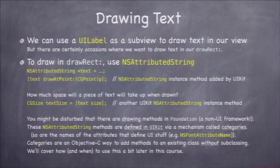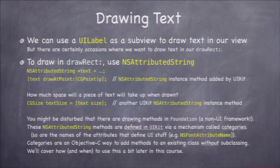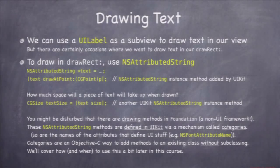You can also find out how big that text is going to take — how much space it's going to take — by sending size to the attributed string and it'll tell you how big it is. Now, you might be a little disturbed by this: attributed string is not really a UIKit thing. All the properties inside usually are, but it itself is not. UIKit actually adds these methods — draw at point, and size, and there are a few other ones.